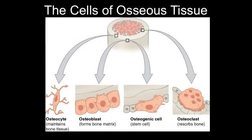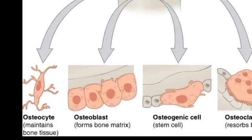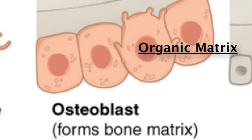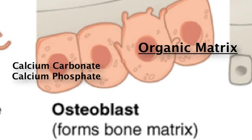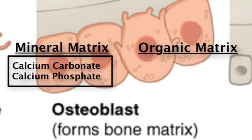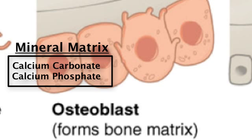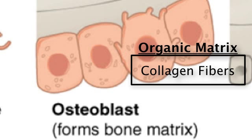Now let's take a look at the bone cells. Bone-forming cells are called osteoblasts. Osteoblasts are responsible for building the organic extracellular matrix of the bone that eventually becomes mineralized by calcium carbonate and calcium phosphate. The minerals make up what is known as the mineral matrix, while the collagen fibers make up the organic matrix. The mineral matrix gives bone its hardness, but without the collagen fibers, bones would be very brittle.